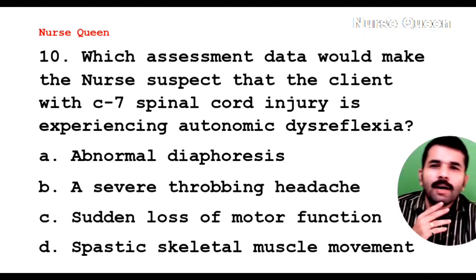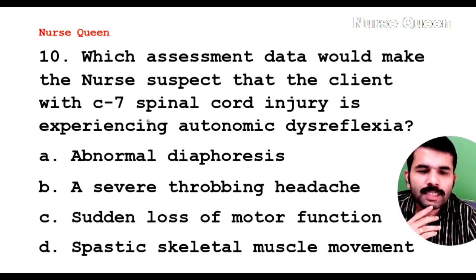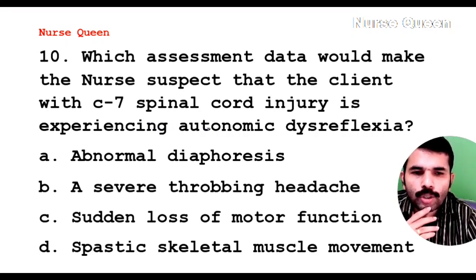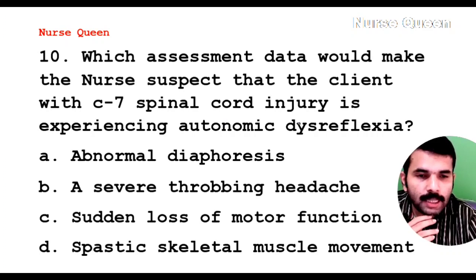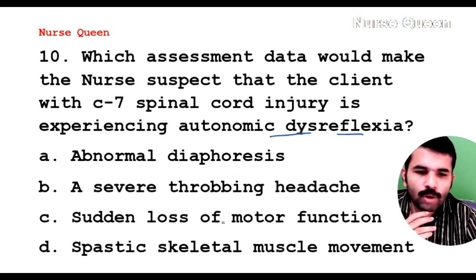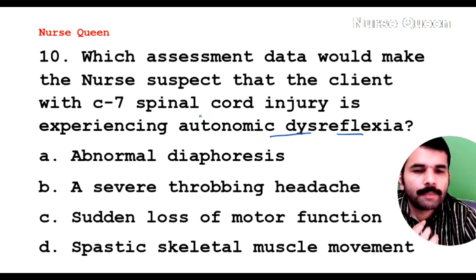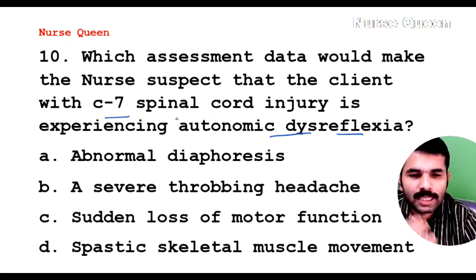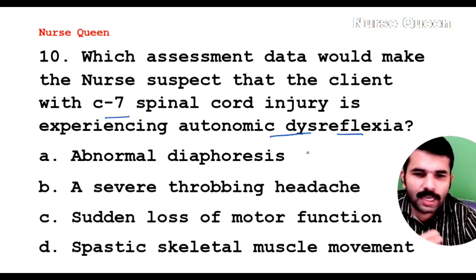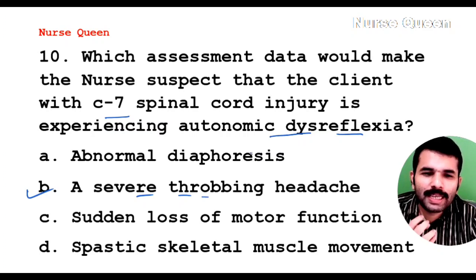Next question: which assessment data would make the nurse suspect that a client with a C7 spinal cord injury is experiencing autonomic dysreflexia? Options are: abnormal diaphoresis; a severe throbbing headache; sudden loss of motor function; spastic skeletal muscle movement. The correct answer is a severe throbbing headache.